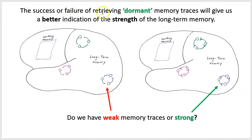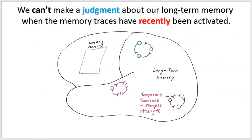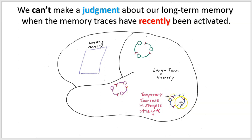The success or failure of retrieving dormant memory traces gives us a better indication of long-term memory strength. We cannot make a judgment about our long-term memory when the memory traces have recently been activated. During a study session, the temporary increase in synapses makes us feel easy access to information, and we might mistakenly conclude that easy access means we have strong memory traces in the cortex — but that would be wrong; it's really just a temporary increase in the strength of those memory traces.